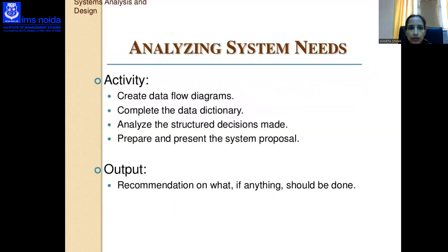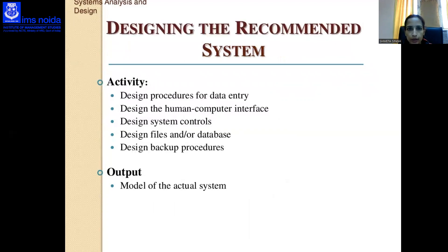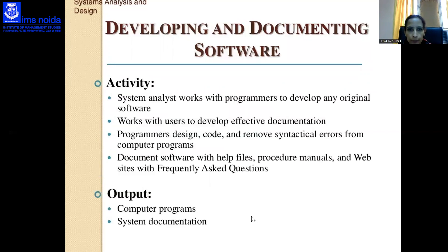Analyzing system needs involves activities like creating a data flow diagram, completing the data dictionary, analyzing structured decisions, and preparing the system proposal. The output is a recommendation on what should be done. Designing the recommended system involves designing procedures for data entry, the human-computer interface, system controls, files, and backup. The output is a model of the actual system.